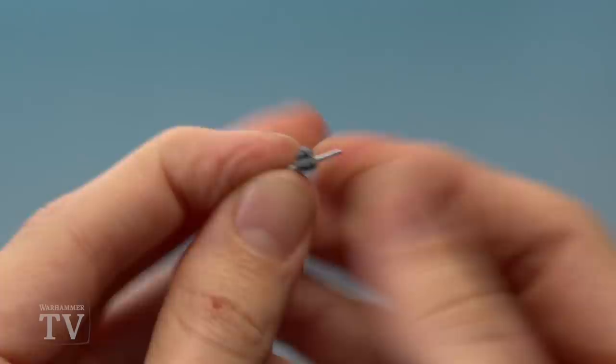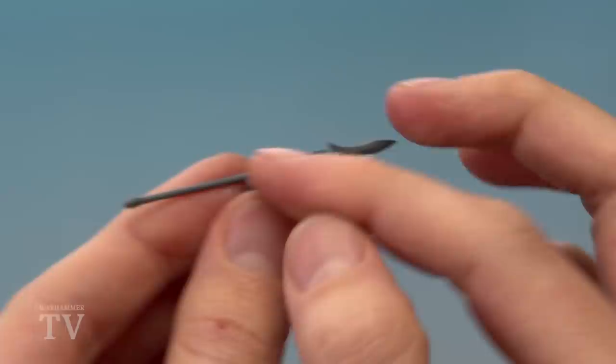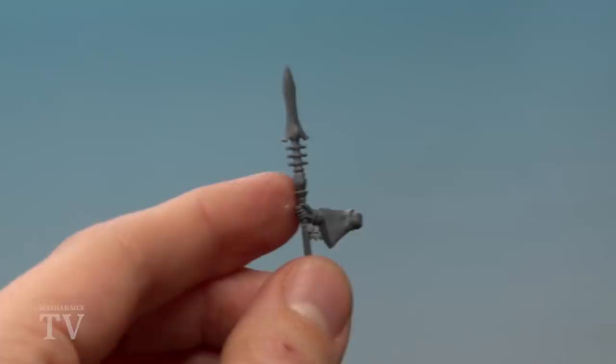I've cut down the pin and it's now glued in place, and with that done we can now prepare the spear. So I've got the singing spear here, and what we're going to do is remove both sides of it by essentially cutting away the hand in the middle there.